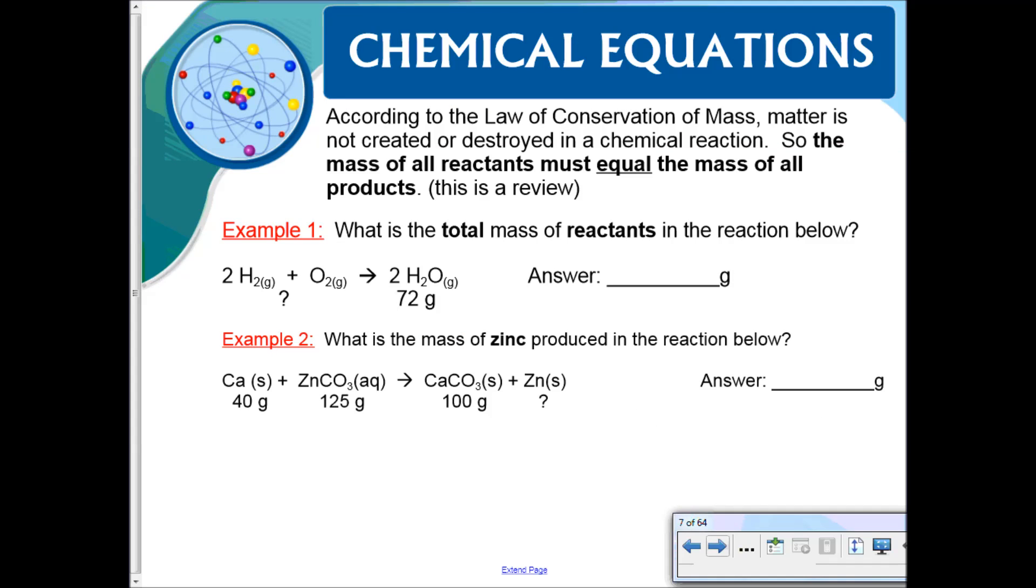According to the law of conservation of mass, we spoke about this at the beginning of the year, matter is not created or destroyed in chemical reactions. So the mass of all reactants must equal the mass of all products. If we were just looking at this, we'd say what is the total mass of reactants in this reaction? We know if the products are 72 grams, then the total mass of the reactants is 72 grams as well.